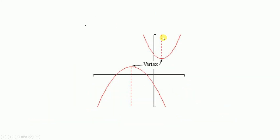A parabola can open upward or downward. When the mouth opens downward, the value increases to a maximum then decreases. When it opens upward, the value decreases to a minimum then increases. We'll study this more in the graphs chapter; for now remember these two extreme points are called the vertex or center.